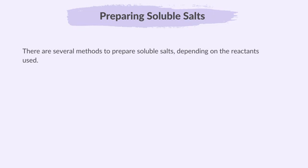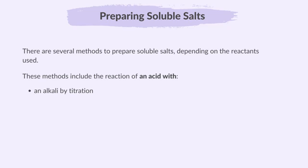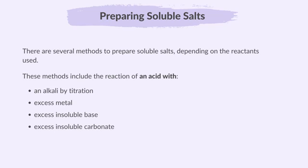Let's take a look at the preparation, separation and purification of soluble salts. There are several methods to achieve this, depending on the reactants used. These methods include: the reaction of an acid with an alkali by titration, excess metal, excess insoluble base, and excess insoluble carbonate.